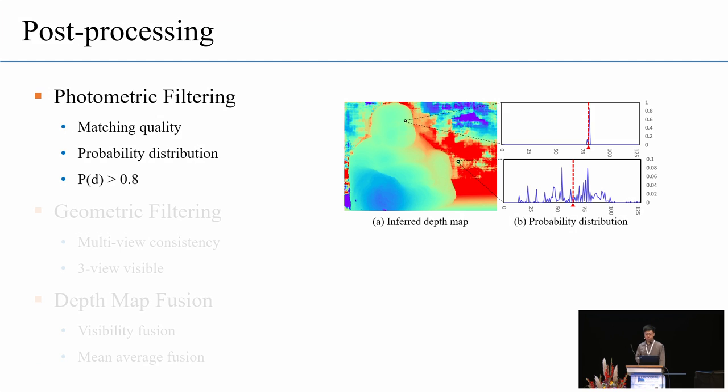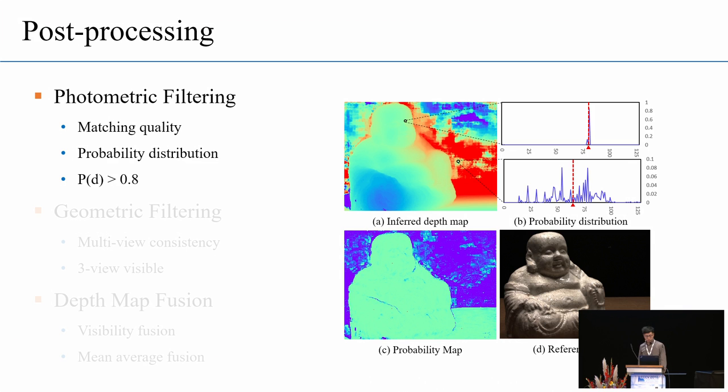For well reconstructed pixels, their probability distribution will be concentrated to one peak. And for the badly reconstructed pixels, the distribution is often scattered and can be easily identified. So, in our experiment, we regard the depth with probability smaller than 0.8 as outliers.